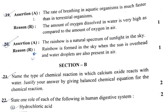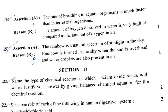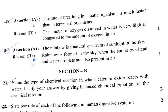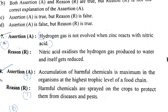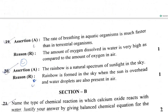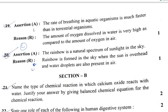Question 19 (Assertion-Reason): The rate of breathing is much faster than in other organisms because of the amount of oxygen available. The assertion is true but the reason is false, so option C is the answer.